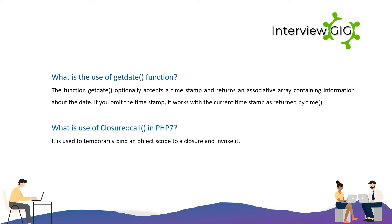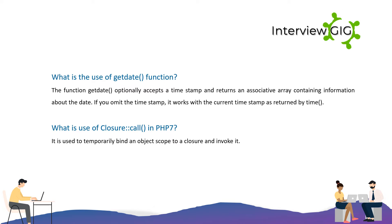What is the use of the getdate function? The getdate function optionally accepts a timestamp and returns an associative array containing information about the date. If you omit the timestamp, it works with the current timestamp as returned by time().